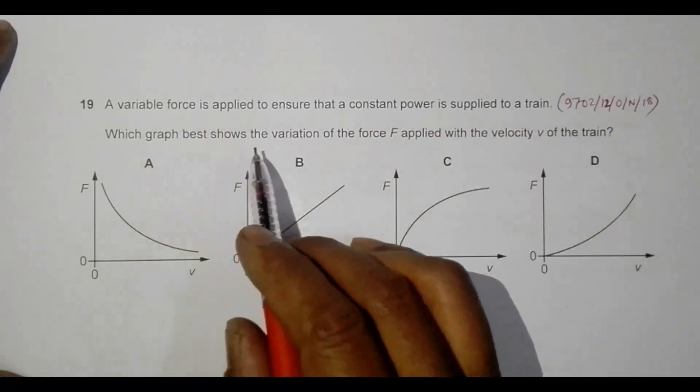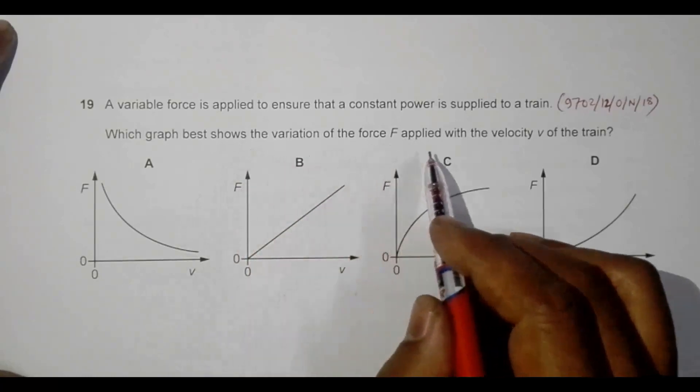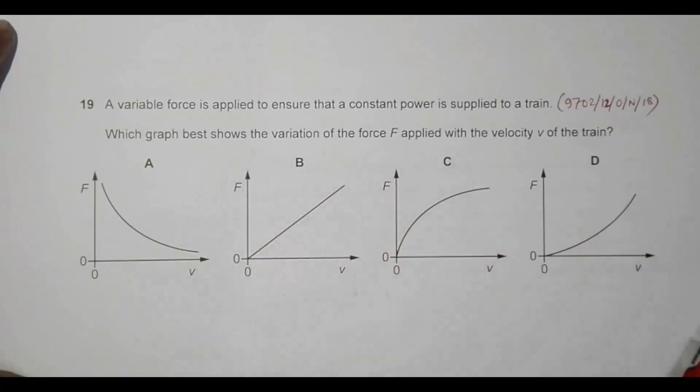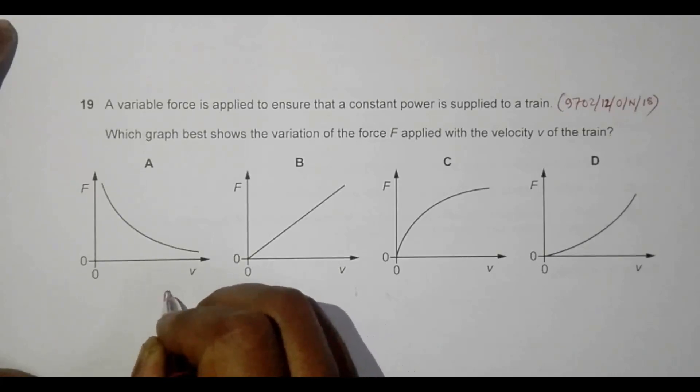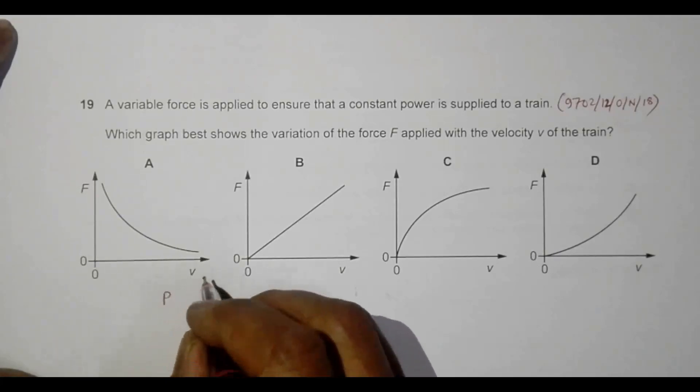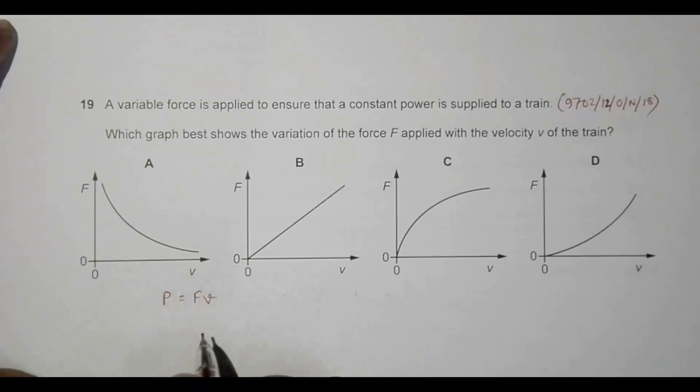Which graph best shows the variation of the force F applied with the velocity V of the train? We have to find the graph of F versus V. The expression relating the power P of the train with the force and velocity is power equals F times V.